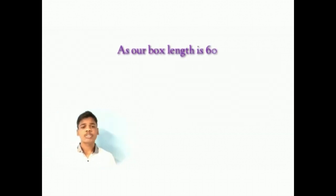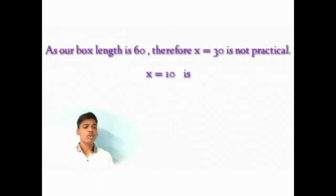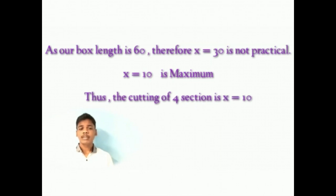As our box length is 60, therefore x is equal to 30 is not practical. So therefore x is equal to 10 is maximum. Therefore the cutting of the fourth section is x is equal to 10.